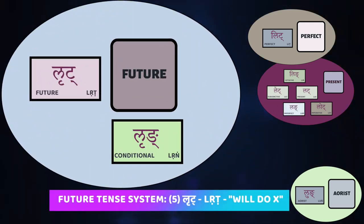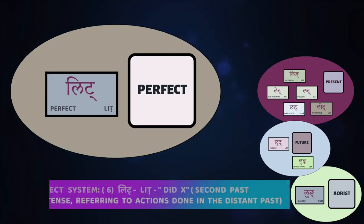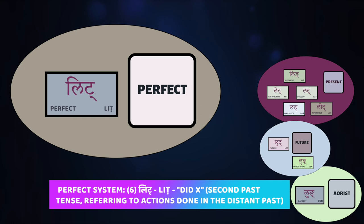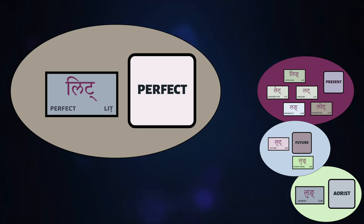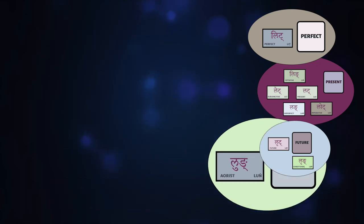Besides the present, there are actually three other entire verb systems in the Sanskrit language — you'll be delighted to learn those probably next year. One of them is the future system, also known as the lṛṭ. Then there's the perfect, known as the liṭ — another second past tense in Sanskrit. Finally, there's even a third past tense system called the aorist, or the luṅ — a notoriously difficult one. But you don't have to worry about any of those just yet — they're fun, but they're down the road.